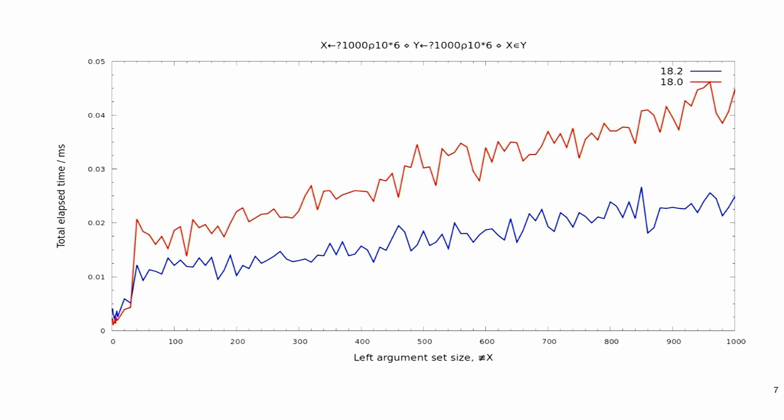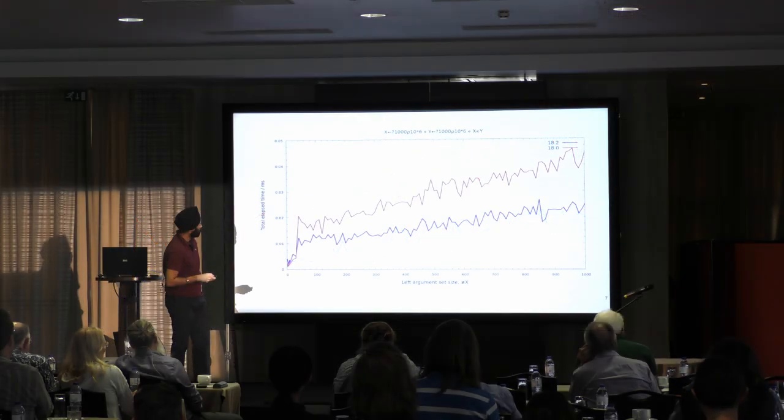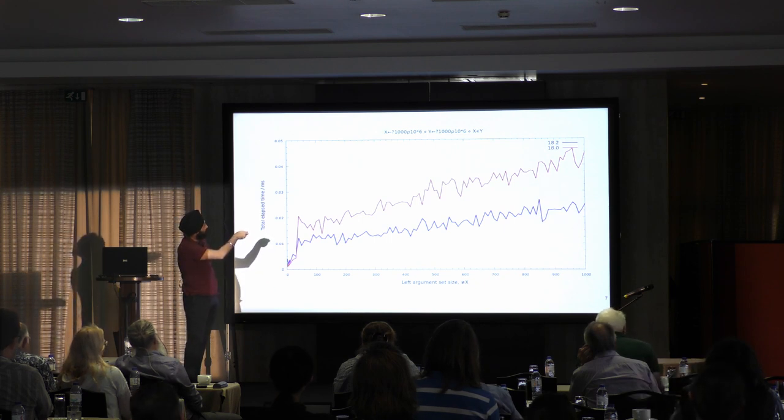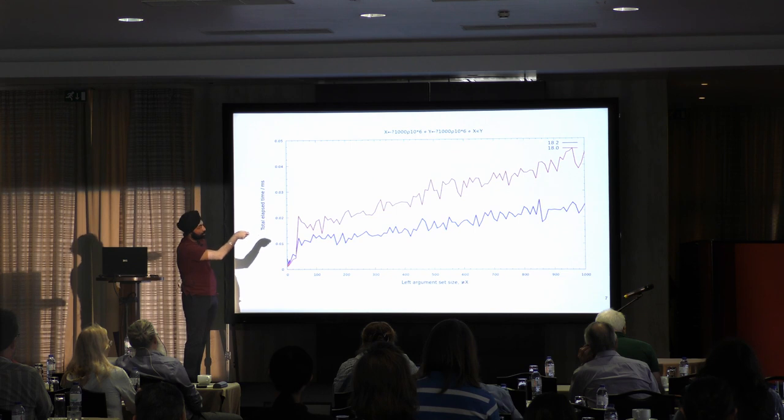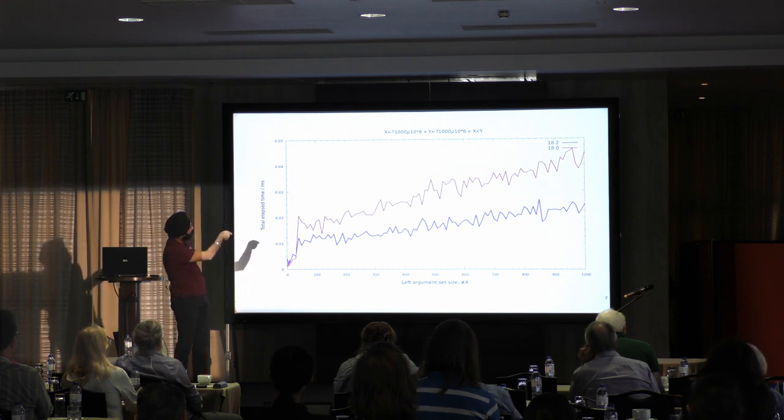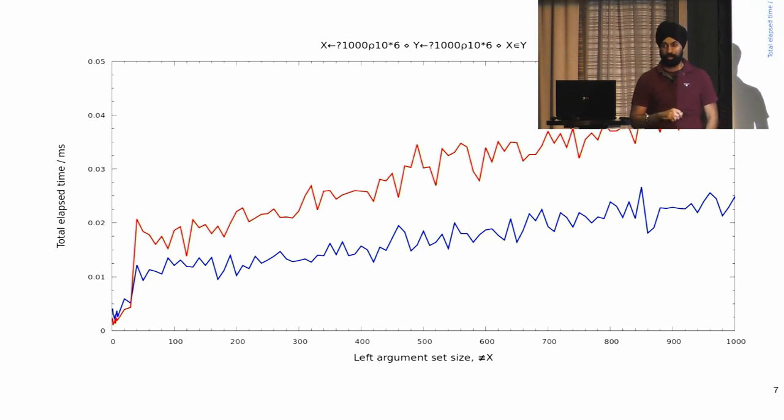One of the simplest questions we can ask is was Dyalog 18.0 faster than 18.2? 18.2 is more closely performant to 17.1 because we removed some of the performance enhancements in 18.0. So, theoretically, 18.0 should be the fastest version of the interpreter and 18.2 is the latest. We are performing this membership operation here. This X here is a lie because we're varying X, the size of X. That's the left-hand argument to this membership operation. Y we're keeping constant and we're populating both with random integer values.